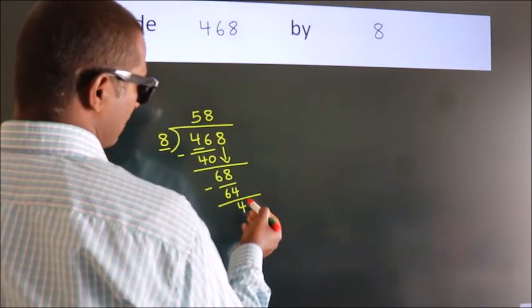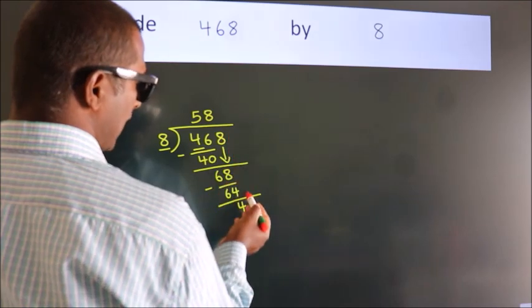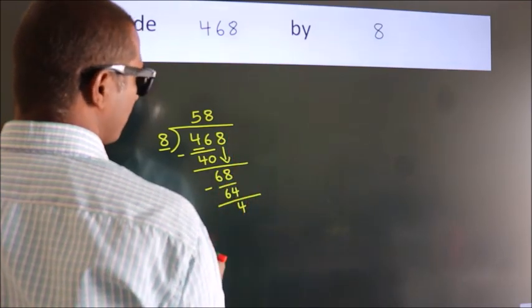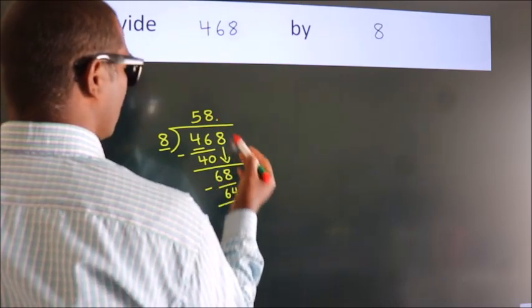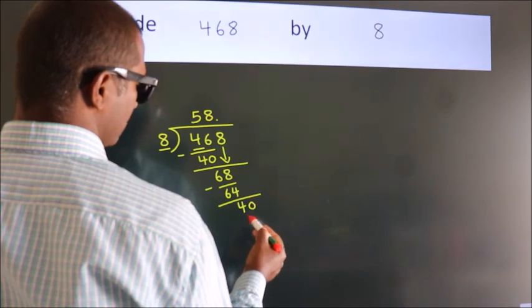After this, no more numbers to bring down. So what we do is, we put a dot and take 0. So 40.